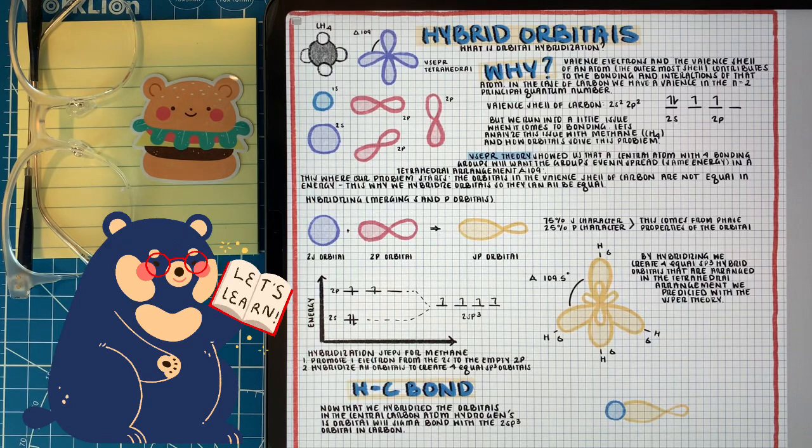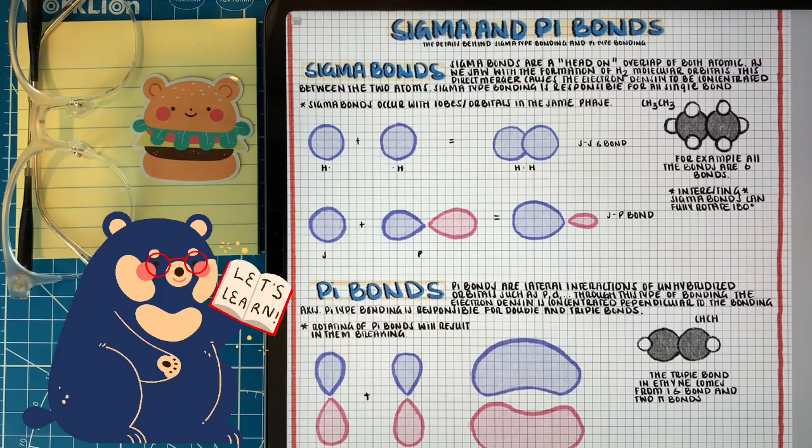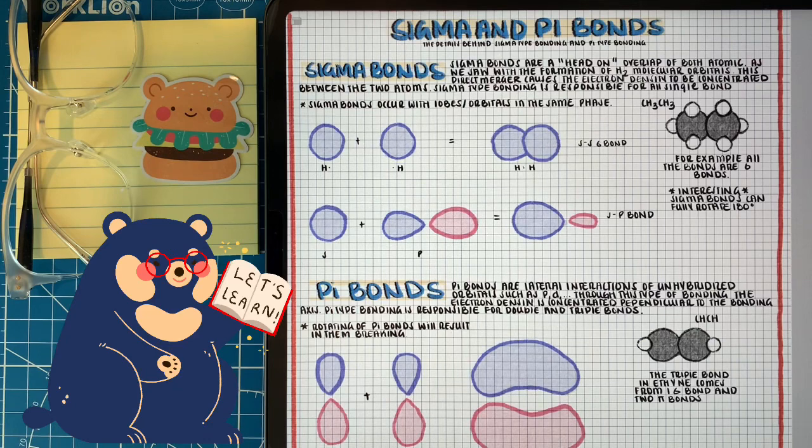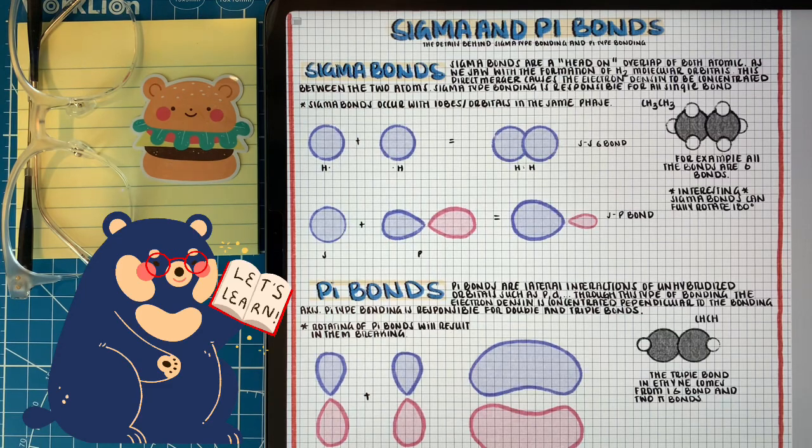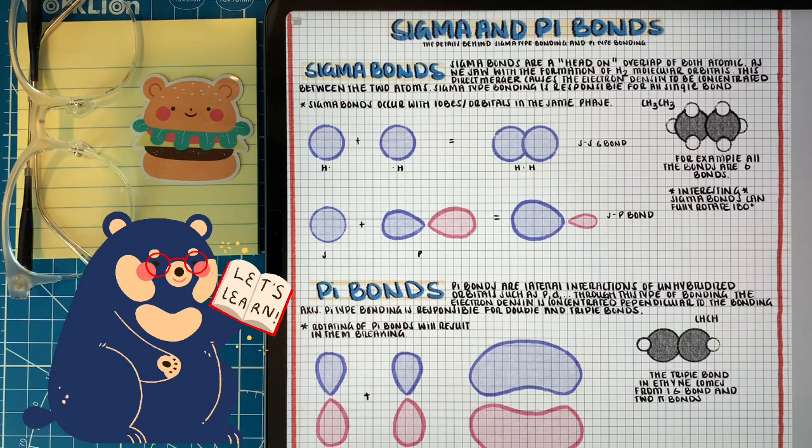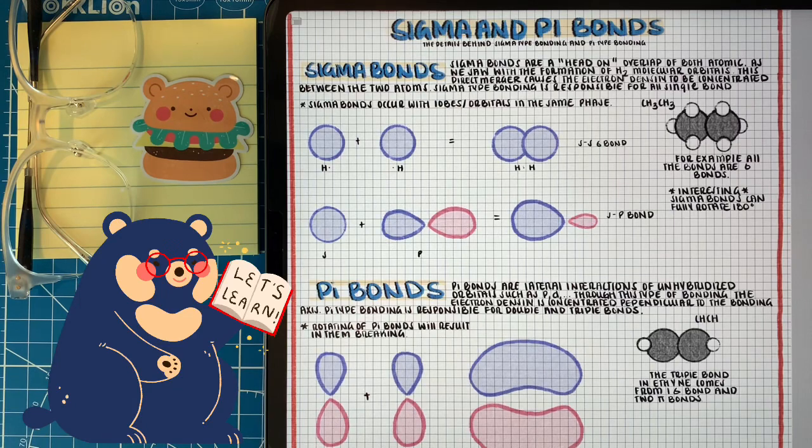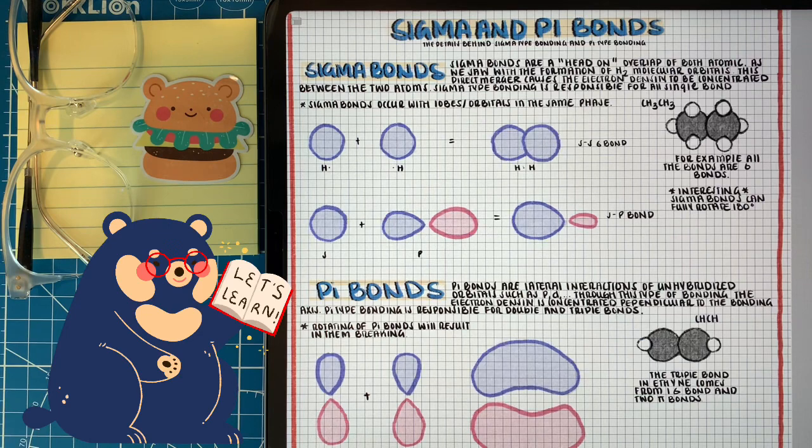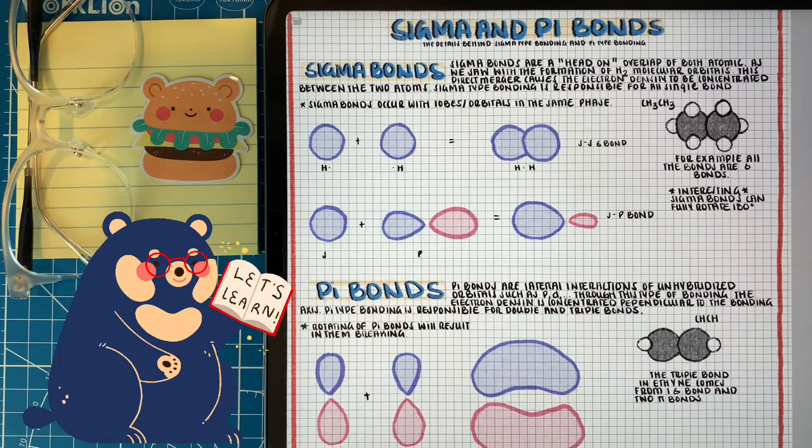In this example, we were only analyzing single bonds. Hybridization gets a little bit more difficult when we talk about double bonds because of the nature of double bonds. There are two main types of bonding that we can refer to. We can talk about sigma bonding and pi bonding. Sigma bonding is a head-on merger or overlap of the two atomic orbitals. This increases the density between the two atoms. Interestingly enough, sigma bonds can fully rotate 180 degrees along the bonding axis. Pi bonds are a little different. Pi bonds are lateral interactions that come from unhybridized p, and later on we'll talk about d orbitals. Interesting though is that pi bonds cannot rotate, but the more interesting thing is that they only happen from unhybridized p orbitals, so we have to make sure we have unhybridized orbitals to function for that double and triple bonding.